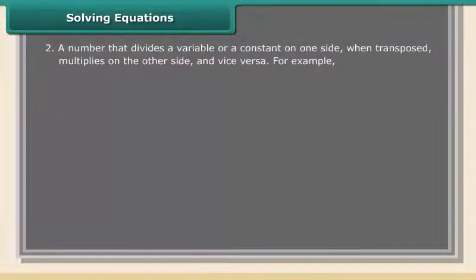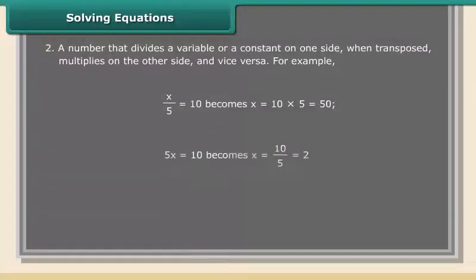2. A number that divides a variable or a constant on one side when transposed multiplies on the other side and vice versa. For example, x upon 5 which is equal to 10 becomes x as 10 into 5 which is 50. 5x is equal to 10 becomes x is equal to 10 upon 5 which equals 2.